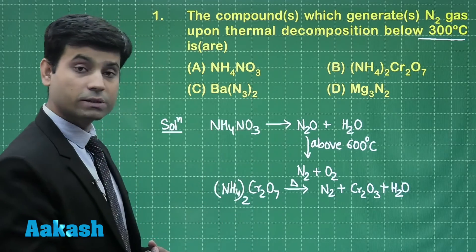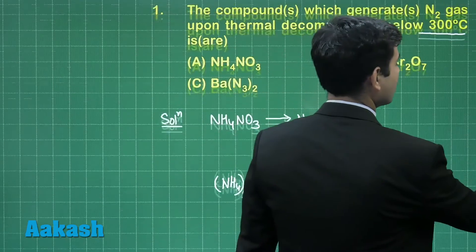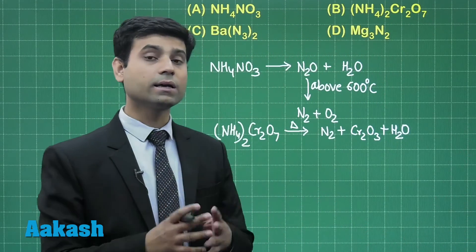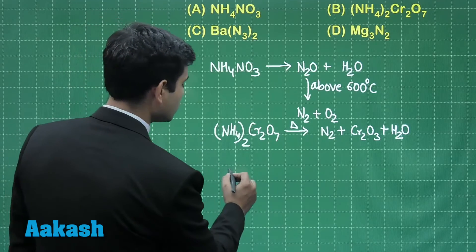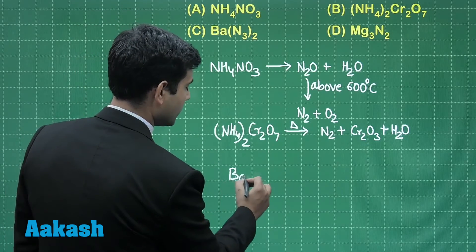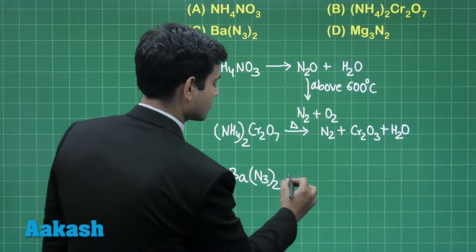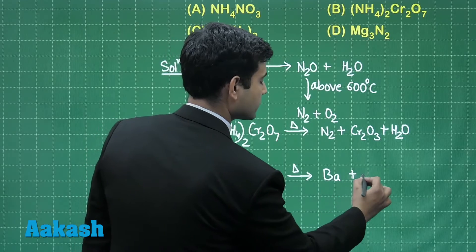If I talk about the third option, which is C option, barium azide—students we know that azides on heating give us pure nitrogen. So highly pure nitrogen will be obtained when barium azide is heated. It will give us barium and nitrogen gas.